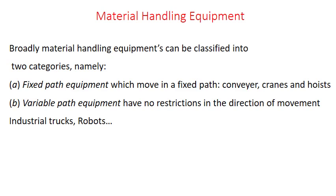Material handling equipment can be majorly classified into two categories. First is fixed path equipment, which moves along a fixed path only — for example, conveyors, cranes, and hoists. Second is variable path equipment, where there is no restriction on the direction of movement — for example, robots or industrial trucks — which can move materials through different paths as needed, unlike fixed path equipment.